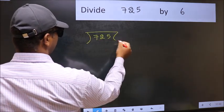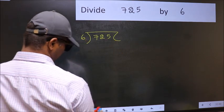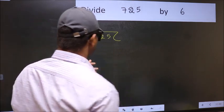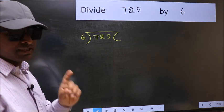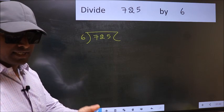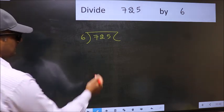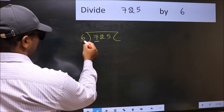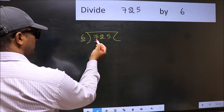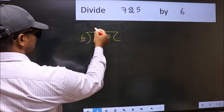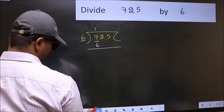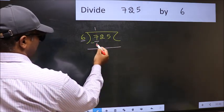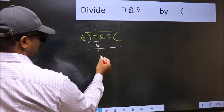725 and 6 here. This is your step 1. Next, here we have 7 and here 6. A number close to 7 in the 6 table is 6 once 6. Now you should subtract. 7 minus 6 is 1.